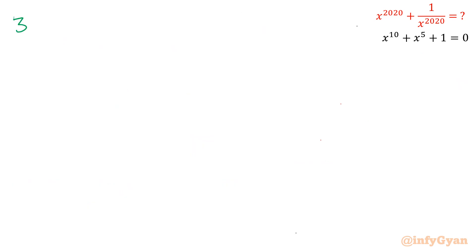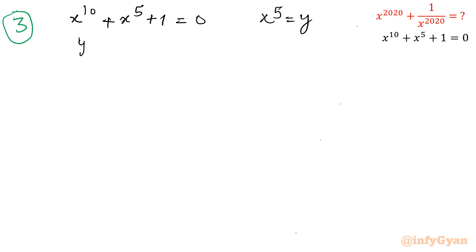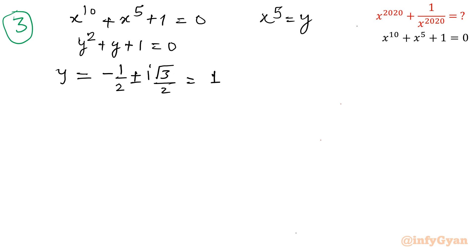Third approach: using complex numbers. Let x power 5 equal y. The equation becomes y square plus y plus 1 equals 0. Solving this gives y equals negative 1 over 2 plus or minus i root 3 over 2, which are the cube roots of unity — omega and omega squared, as seen in the last video. So we write x power 5 equals omega, and the original equation becomes omega square plus omega plus 1 equals 0, confirming omega cube equals 1.